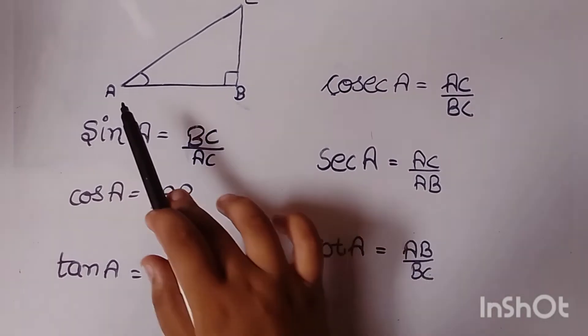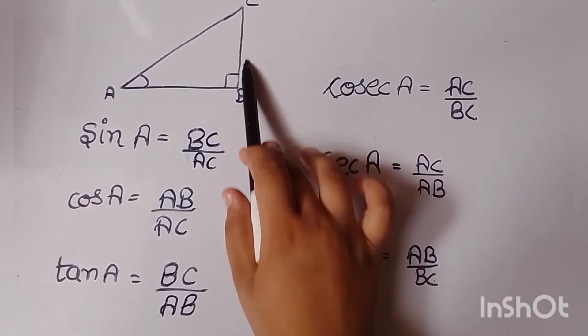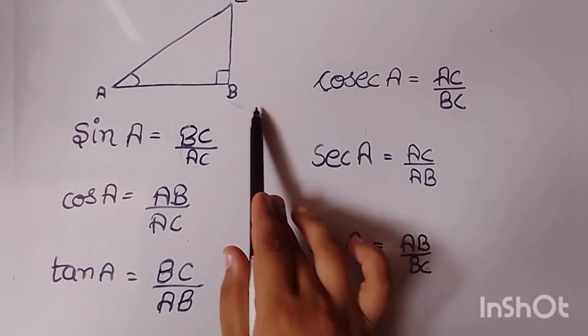What is tan? That is perpendicular upon base, that is BC upon AB.